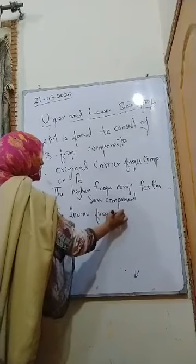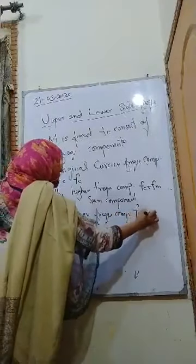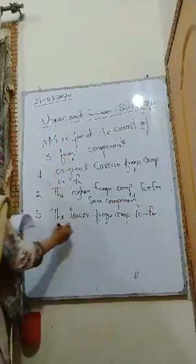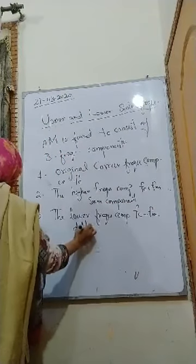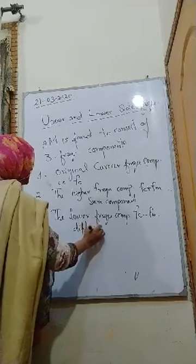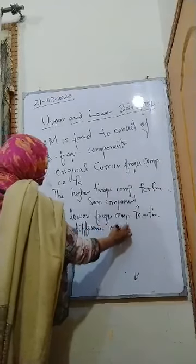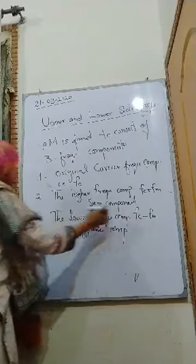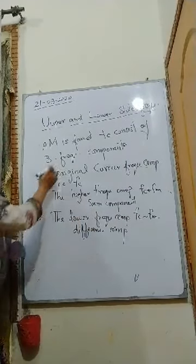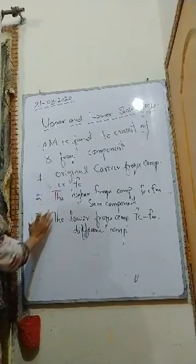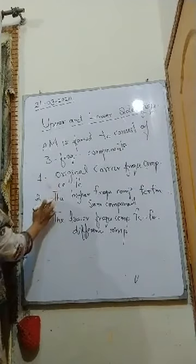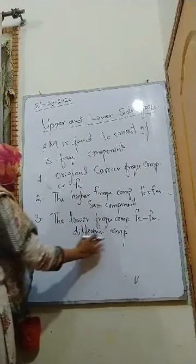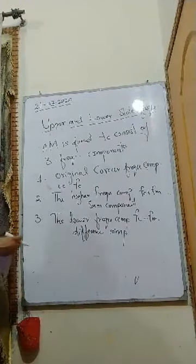Number three is the lower frequency component, that is fc minus fm, and it is also called the difference component, because it is the difference of fc and fm. fm is the frequency of the modulating signal and fc is the frequency of the carrier wave signal. So each modulated signal consists of these three major components: the original carrier wave, the high frequency sum component, and the low frequency difference component.